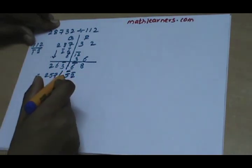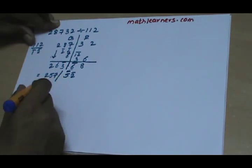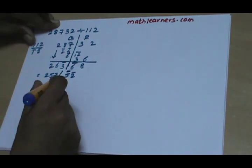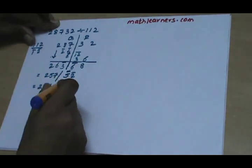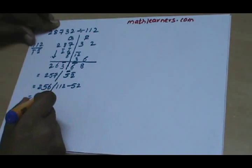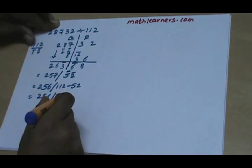Remainder we are obtaining as negative. So one quotient we will have to take from quotient side. As one quotient is going from quotient side we are left with quotient 256 and remainder will be 112 minus 52. So final answer is 256 and 60 will be your remainder.